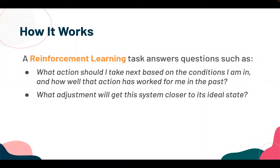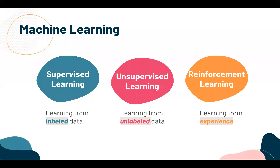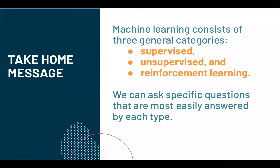A reinforcement learning task answers questions such as: what actions should I take next given my current conditions and past performance? It learns correlations about the right actions to take in an environment and what adjustments bring the system closer to an ideal state. In summary, supervised learning learns from labeled data, unsupervised learning learns from unlabeled data, and reinforcement learning learns from continual experience in an environment.